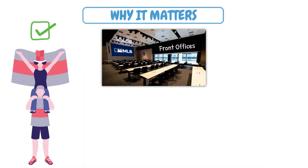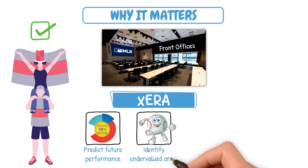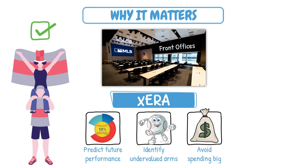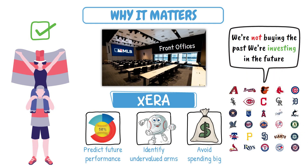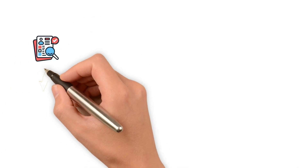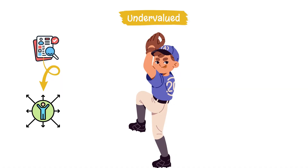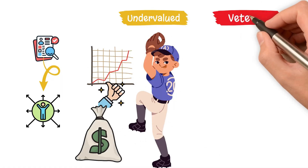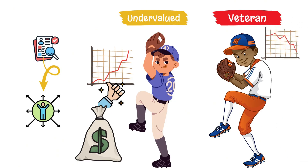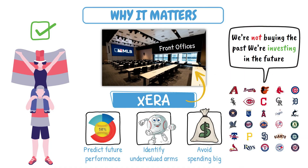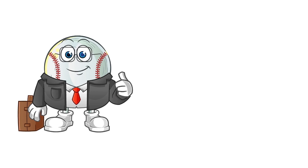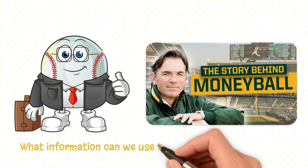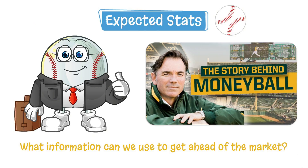But how can front offices also use this? Stats like expected ERA help front offices predict future performance, identify undervalued arms, and avoid spending big on smoke-and-mirrors pitchers. Teams aren't looking to buy past results — they're looking to invest in future value. The undervalued player who is about to break out is a much better use of a team's funds than a veteran whose results have been declining. xERA won't be the singular deciding factor, but the ideas behind it are — what information can we use to get ahead of the market? It's the whole idea behind Moneyball.